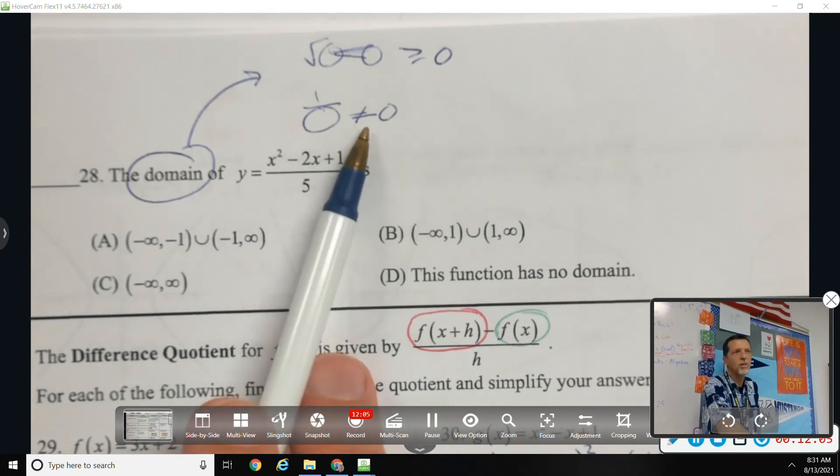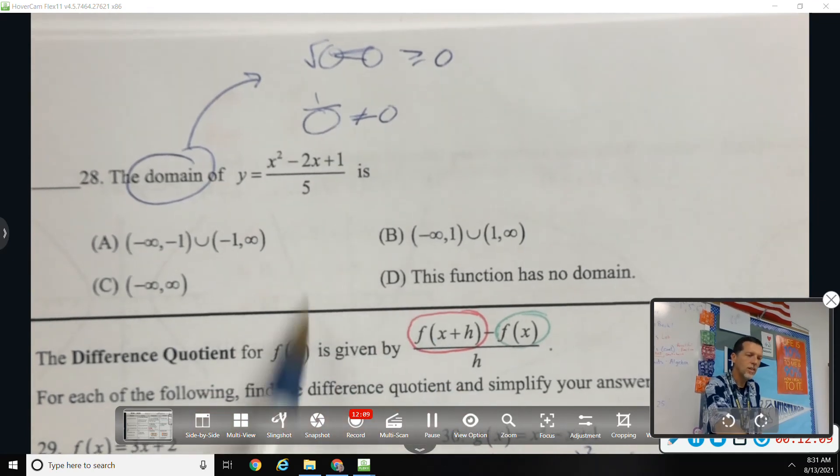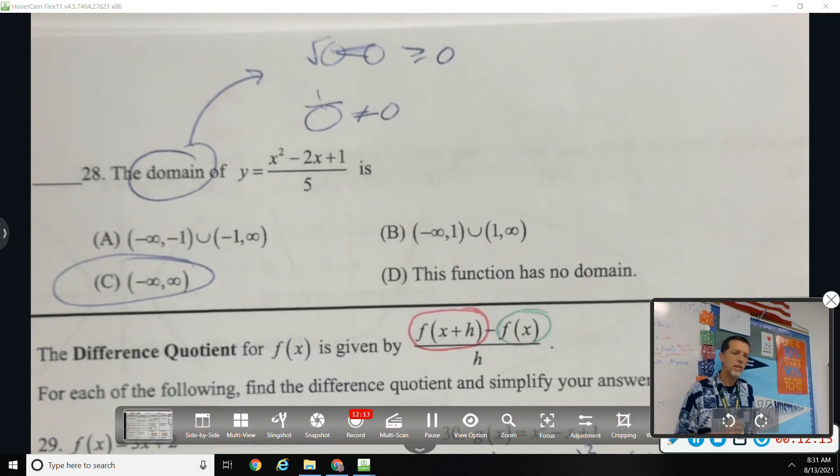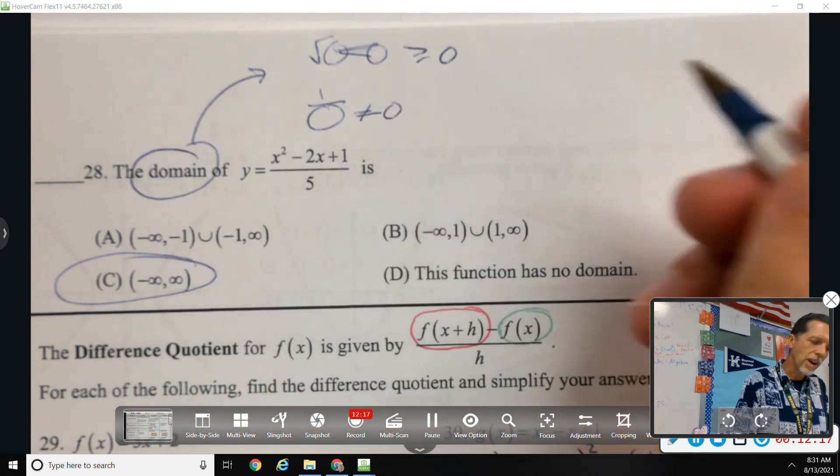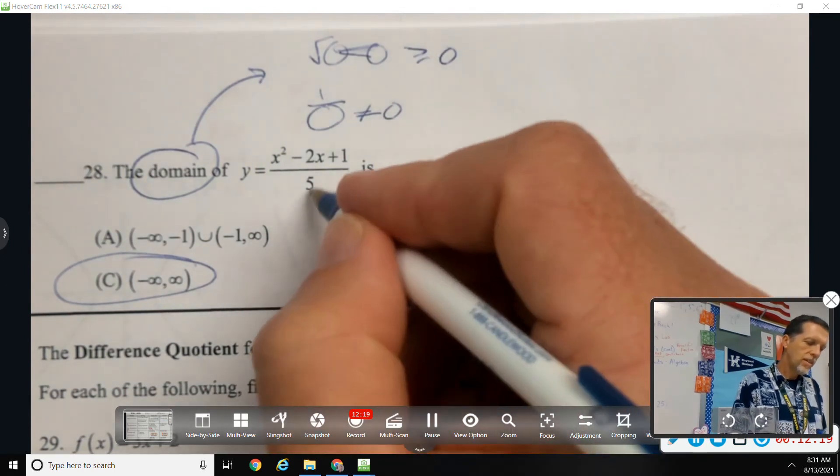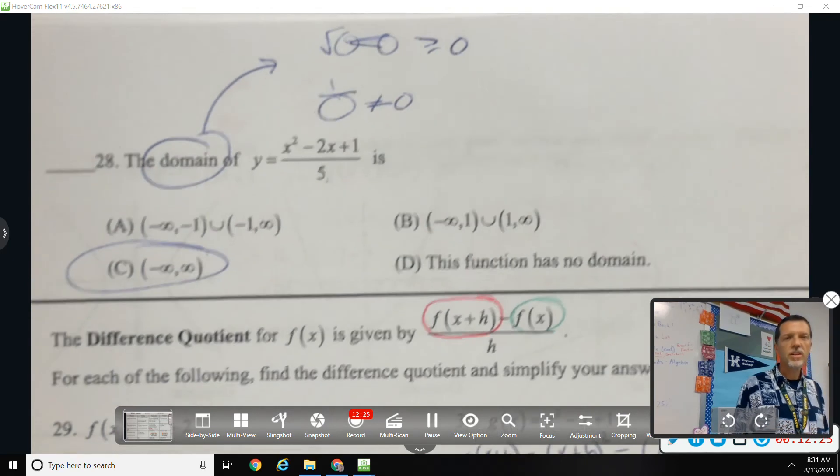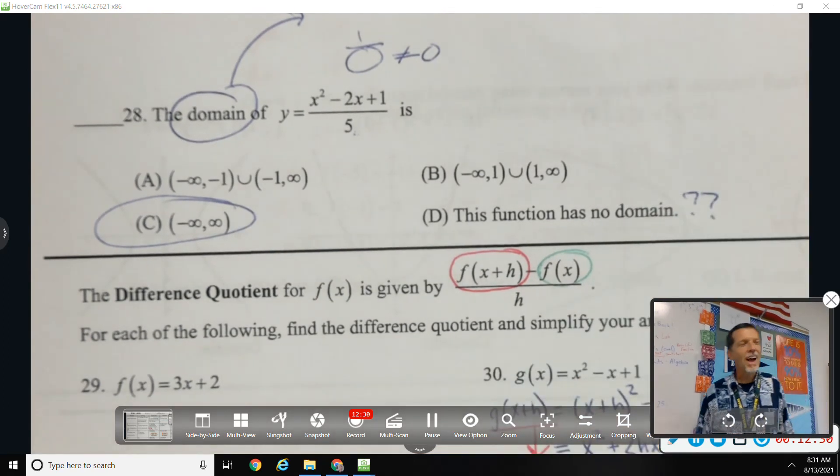So there's nothing to worry about. This is going to be all real numbers for the domain. Again, the top will factor, but I don't care about factoring the top. It does have a fraction, but the bottom will never be 0, so it doesn't matter. So it's all real numbers.